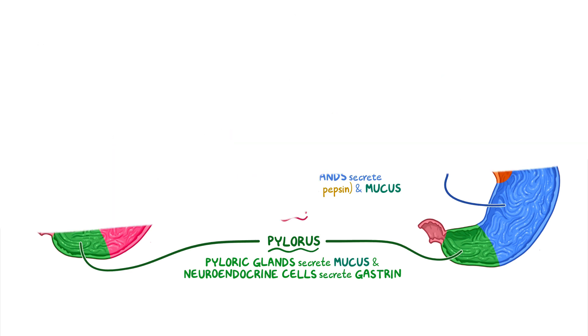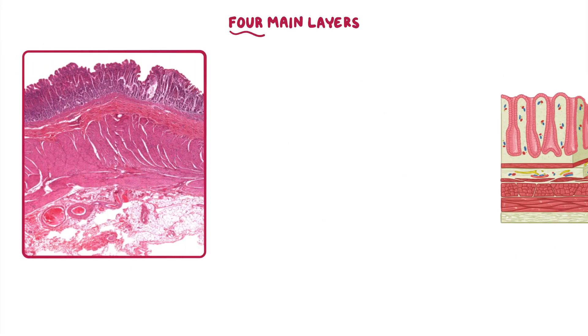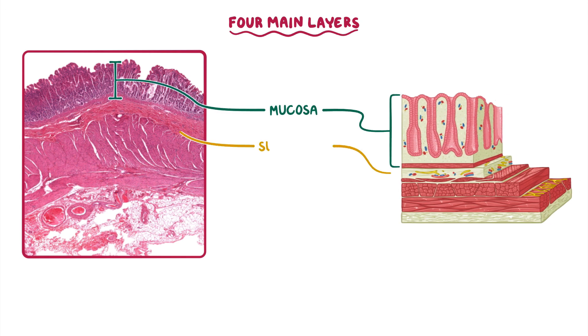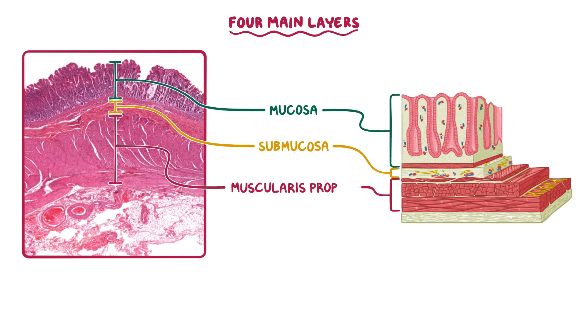Similar to the rest of the GI tract, the wall of the stomach has four main layers: the inner mucosa, submucosa, muscularis propria, and outer serosa, although some portions of the GI tract have an outer layer of adventitia instead of serosa.